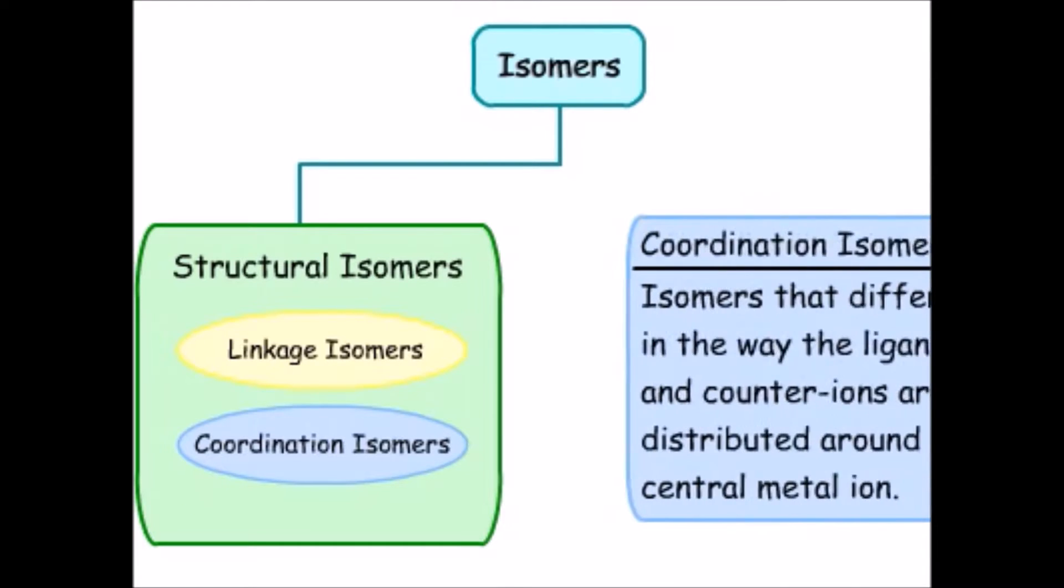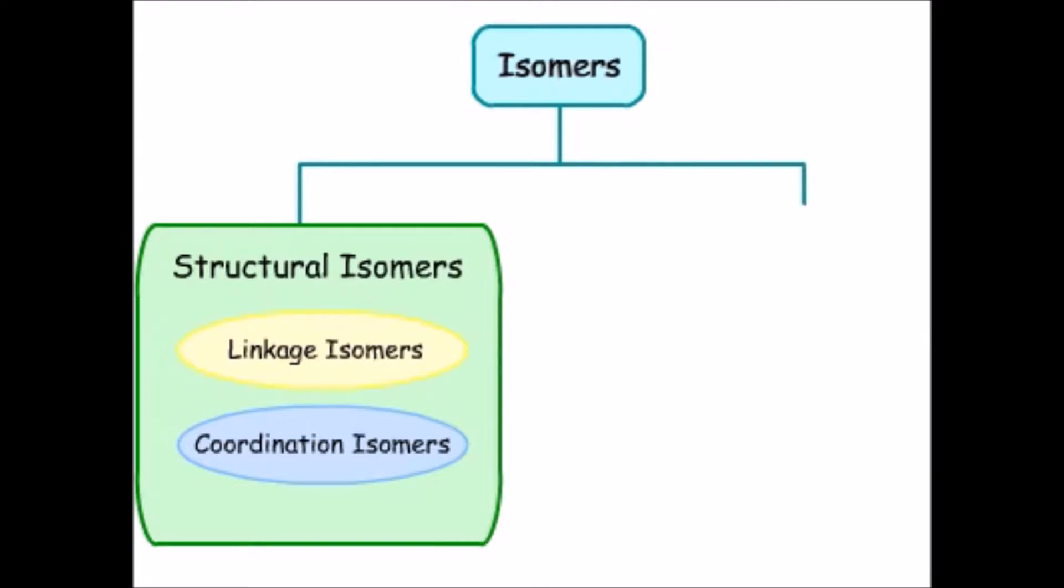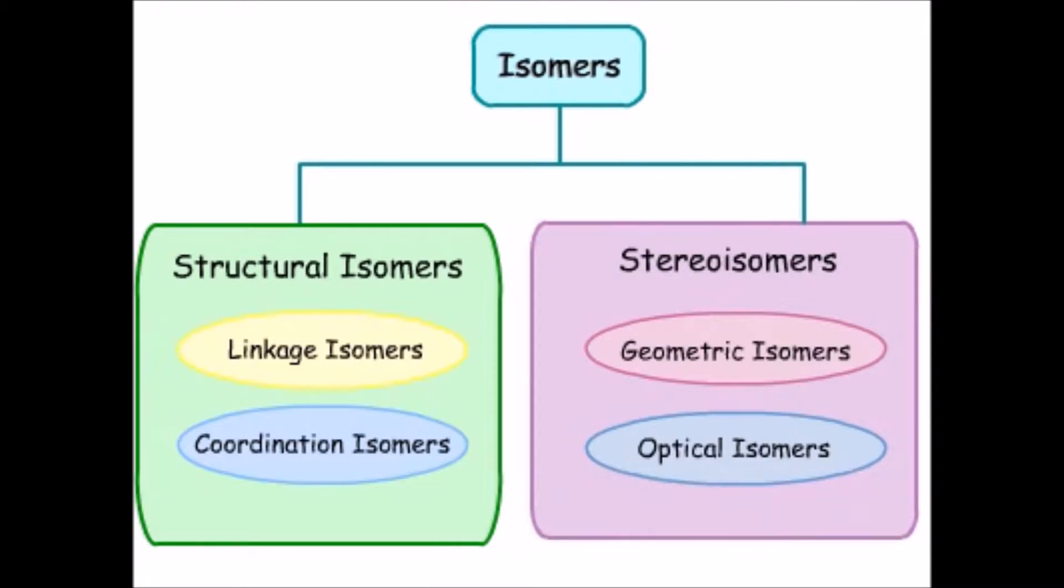The second special group of structural isomers are the coordination isomers. These differ only in the way the ligands and counter ions are distributed around the central metal ion. Once we finished discussing structural isomers, we turned our attention to stereoisomers.